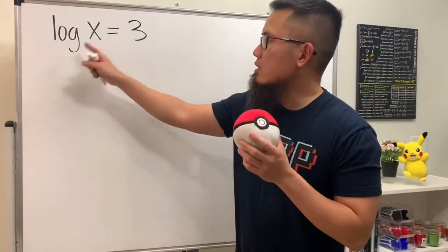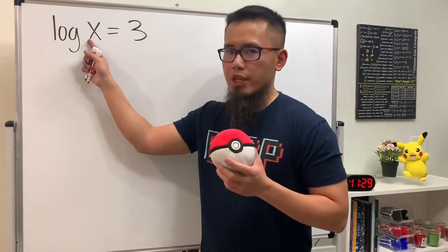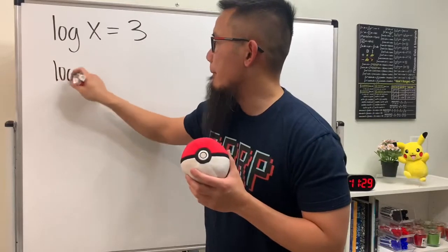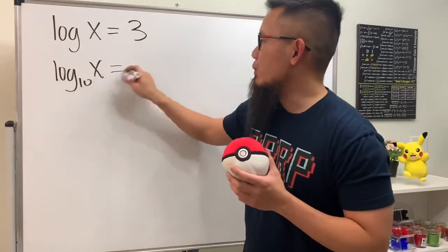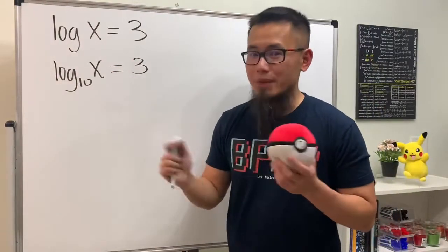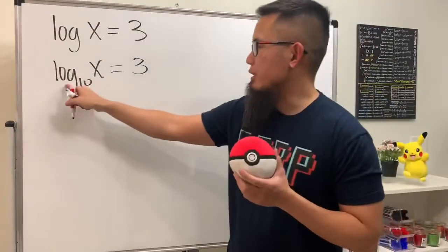Here we'll be solving log of x equals 3. We don't have any number right here, so remember this means we have log base 10 of x equals 3. That's the standard log. So how can we do this? Well, remember we'll just pretend both sides are exponents.